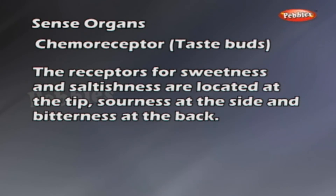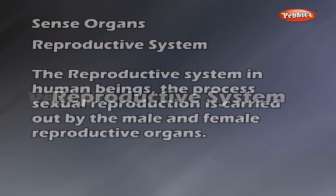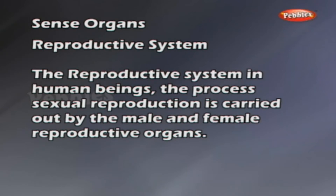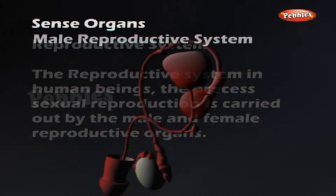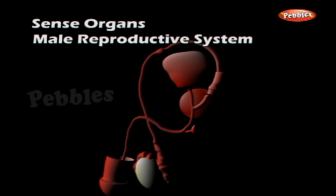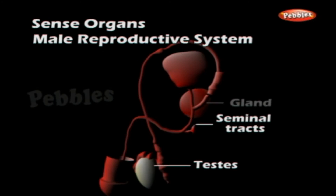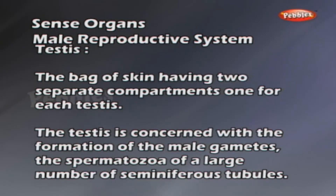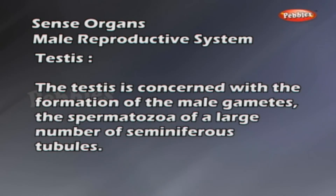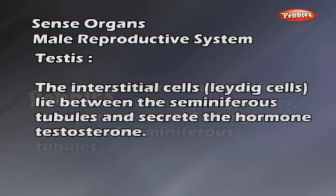Reproductive System. The reproductive system in human beings: the process of sexual reproduction is carried out by the male and female reproductive organs. Male Reproductive System consists of a pair of testes, seminal tracts, and related glands. The testes are a pair of ovoid organs, lying one in each scrotal sac, with two separate compartments. The testes are concerned with the formation of the male gametes, the spermatozoa, within a large number of seminiferous tubules. The interstitial cells, Leydig cells, lie between the seminiferous tubules and secrete the hormone testosterone.